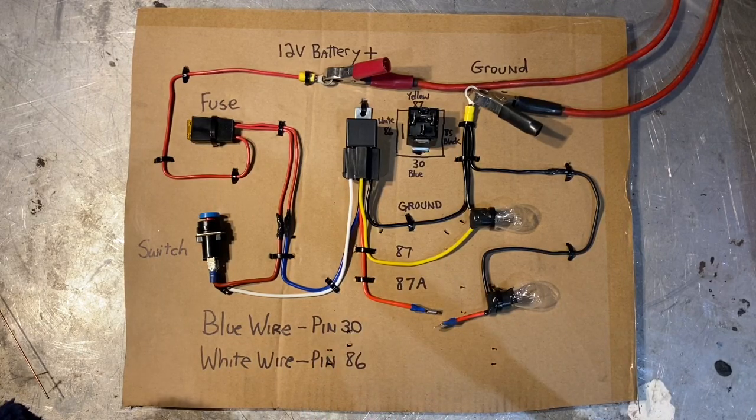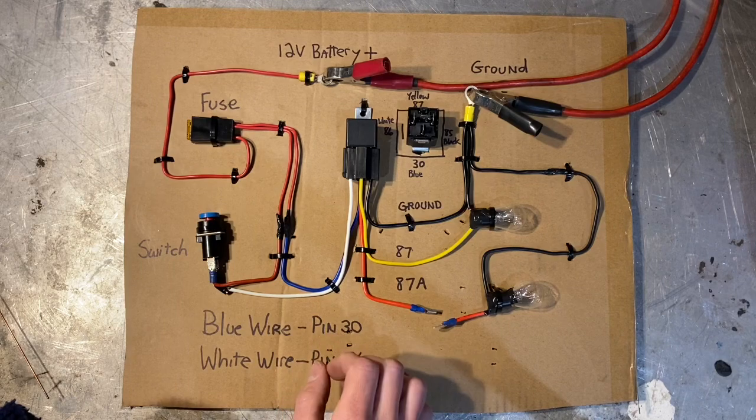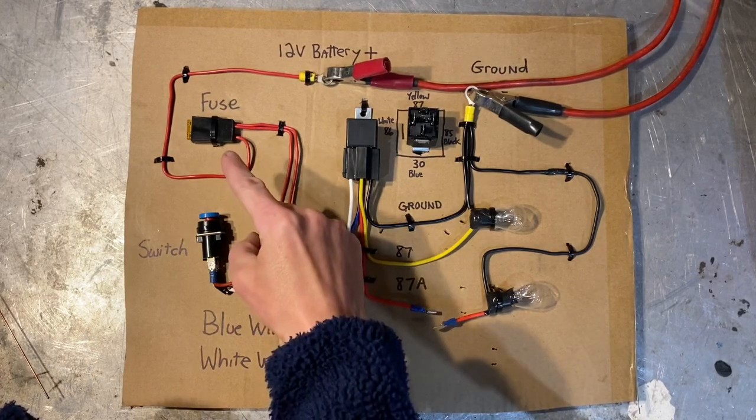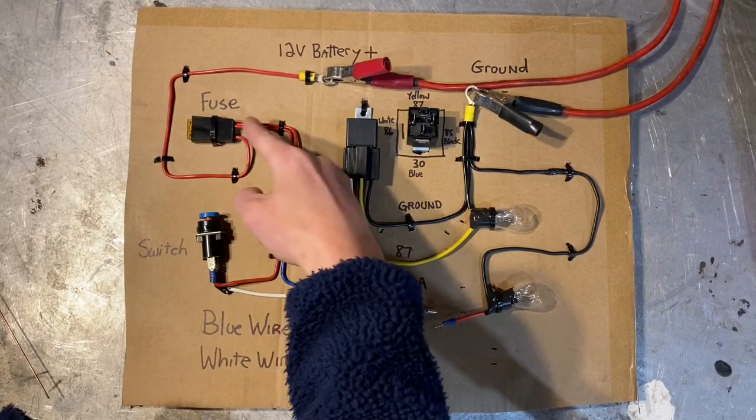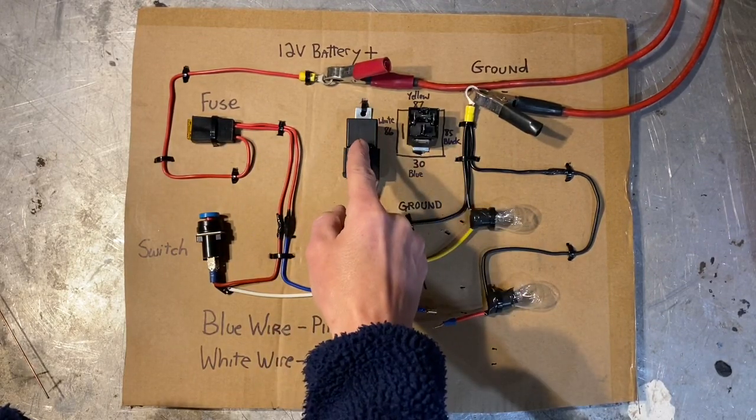Alright, let's talk about pin 30 first. Pin 30 goes to the battery, but you want to have a fuse in between. So you start with the battery, run a wire through a fuse, and then down and around to pin 30 on the relay.